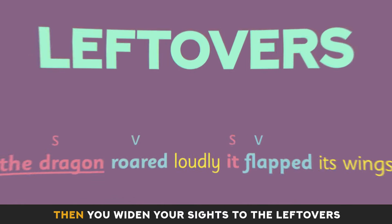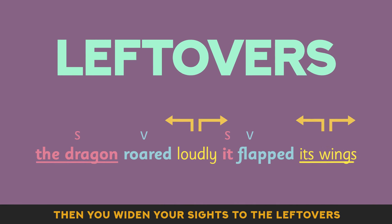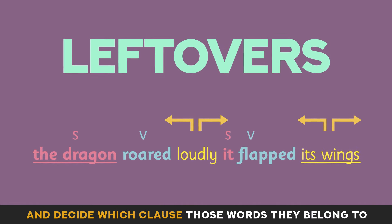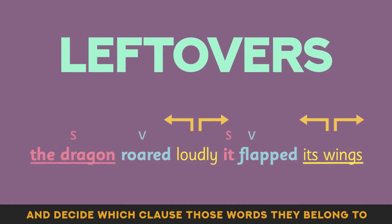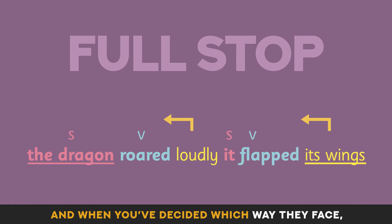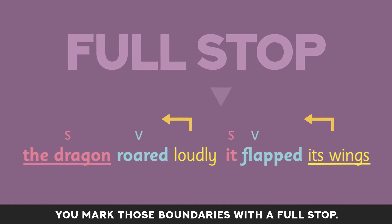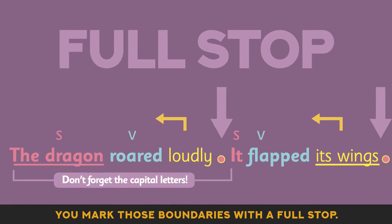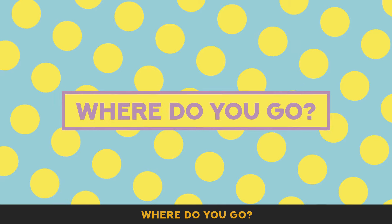Then you widen your size to the leftovers, and decide which clause those words belong to. And when you've decided which way they face, you mark those benches with a foolstop. Oh foolstops, where do you go?